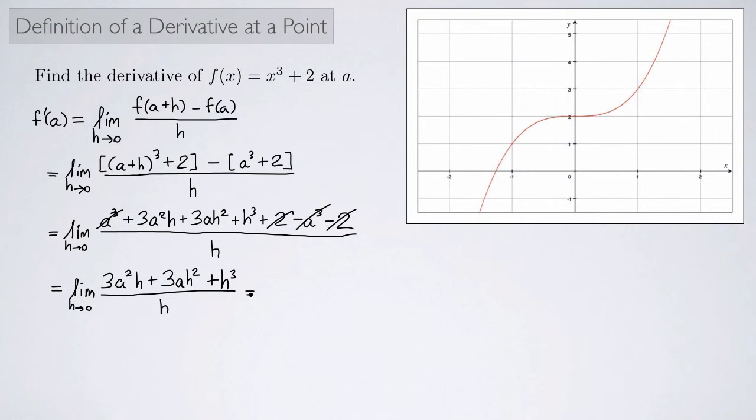And now I can get rid of the h's here. So let's see. This is going to be the limit as h approaches 0 of... So I'm not going to have an h in the denominator anymore. I'm going to cancel here, here, and here. So I'm going to have 3 a squared. I have 1 h surviving here. So it's going to be plus 3 a h. And then I have 2 h's surviving here. So I'm going to have plus h squared.